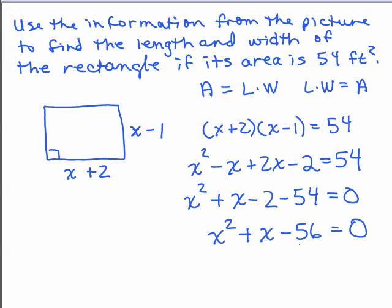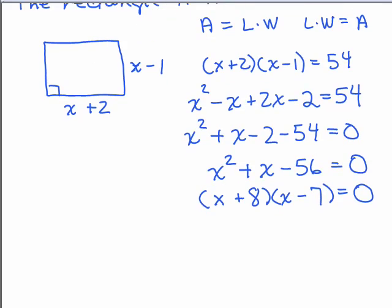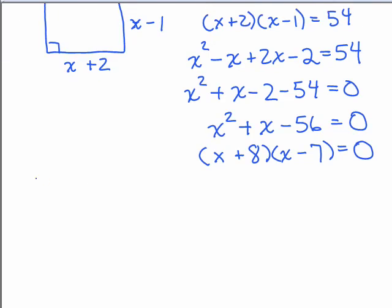Now we have a quadratic trinomial, so we factor. This is one of the easier ones to factor because we have a nice x squared. Factors of 56 that have a difference of 1 — the middle term — are going to be 8 and 7. I need plus 8 and minus 7, giving us x plus 8 equals zero or x minus 7 equals zero.